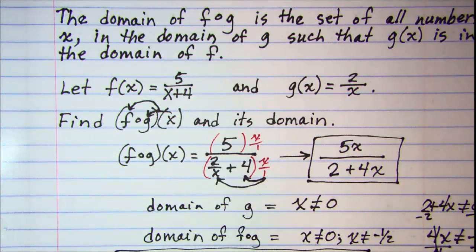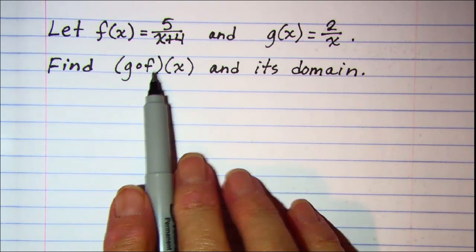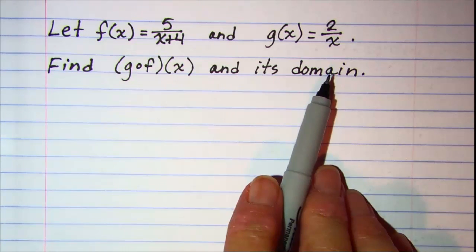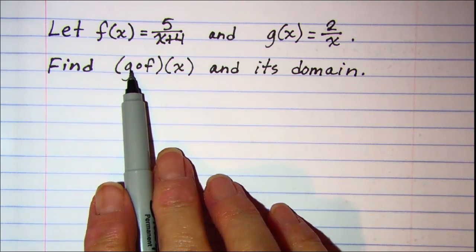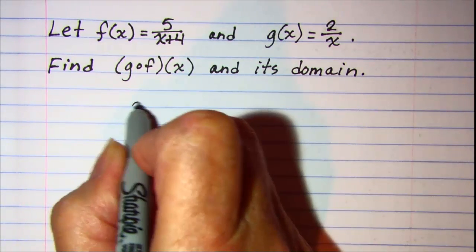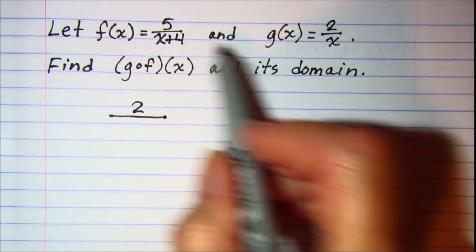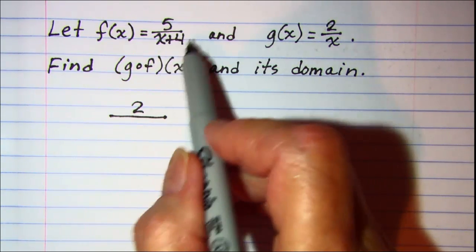Let's do another one with those same functions. This time let's find g∘f(x) and its domain. So we'll start writing our g function which is 2 over, and then in place of x we'll put in our f function.